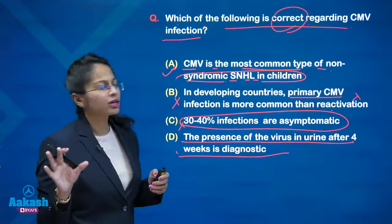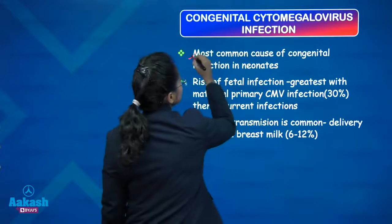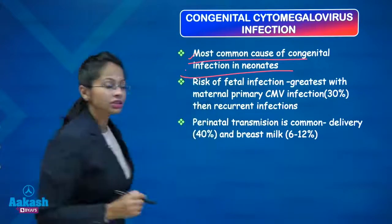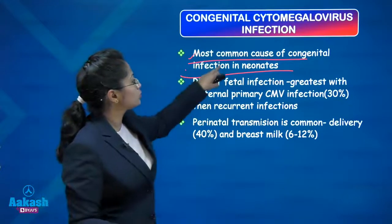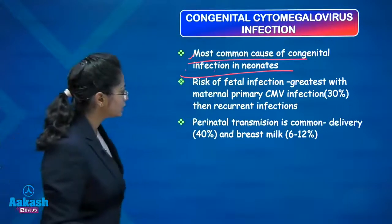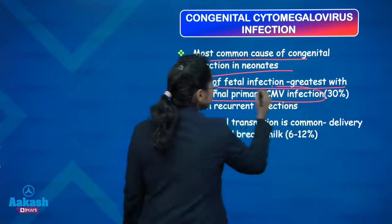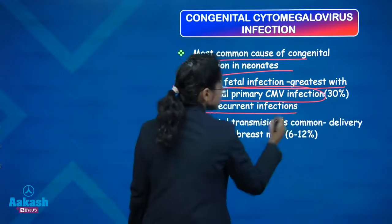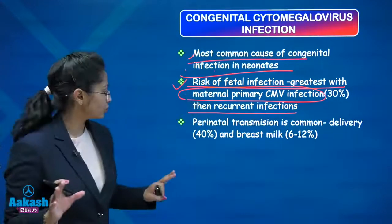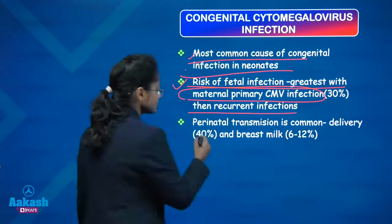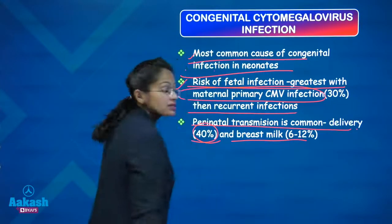Now a few important points about CMV infection. CMV infection is the most common congenital infection in neonates — in the TORCH group of infections, it is the most common congenital infection. The risk of infection is greatest with maternal primary CMV infection than recurrence. Perinatal transmission is very common: at the time of delivery 40 percent, breast milk 6 to 12 percent.